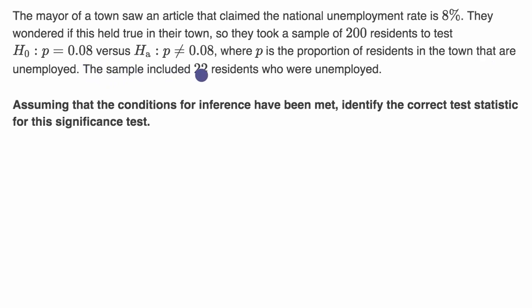The sample included 22 residents who were unemployed. Assuming that the conditions for inference have been met - the random, normal, and independence conditions that we've talked about in previous videos - identify the correct test statistic for this significance test.